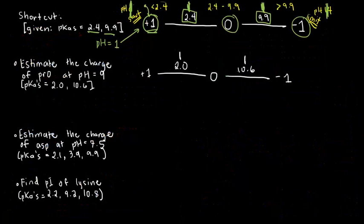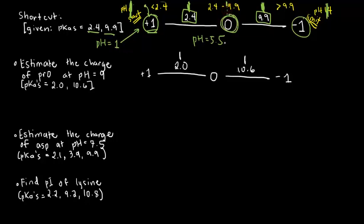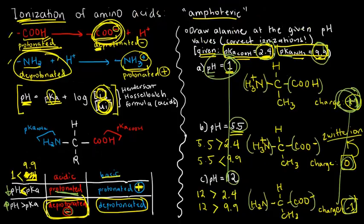Or for example, what if my pH is 5.5? Well, 2.4 is here. 9.9 is here. So 5.5 is somewhere in the middle of those two values. And it is very close to 0, so maybe the charge is 0. And we also had that a while ago.